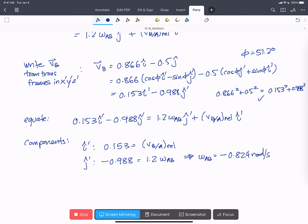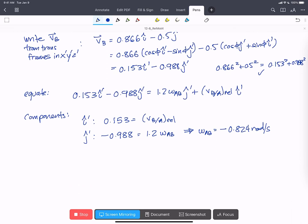The minus tells us that when we assigned a positive we were wrong. So the math is directly giving us the correct direction. And so our final vector value for omega AB is minus 0.824 rads per second in the k hat or k hat prime direction.